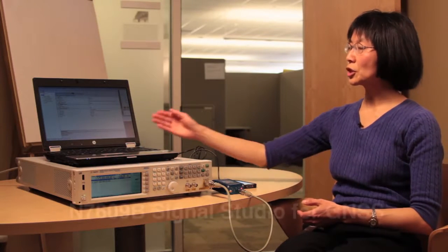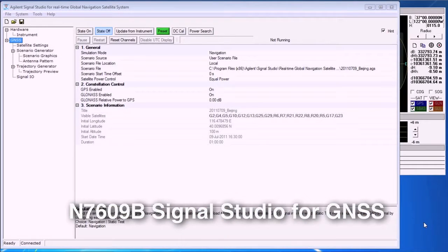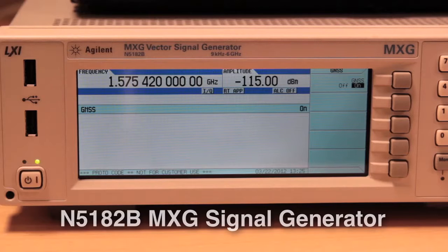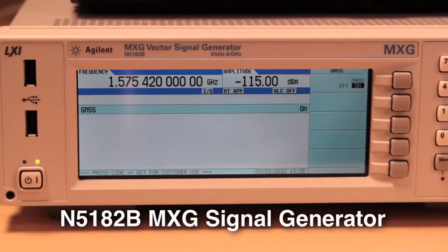This solution uses Agilent's N7609B Signal Studio for Global Navigation Satellite Systems or GNSS software running on a PC with the new X-Series signal generator.